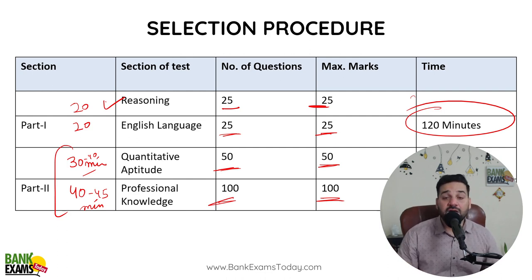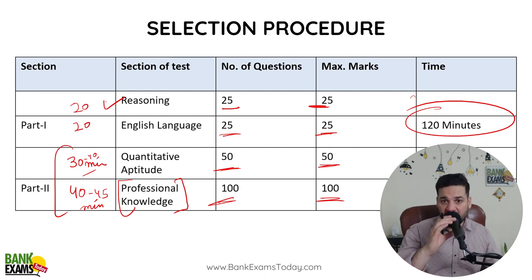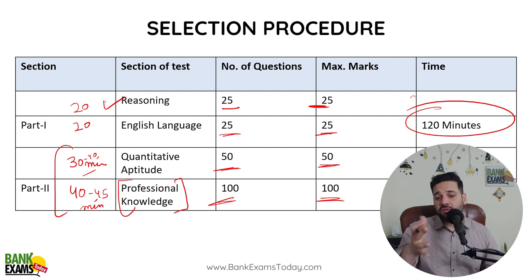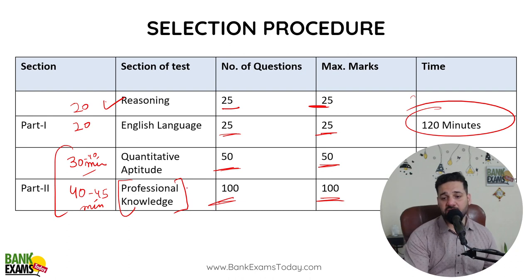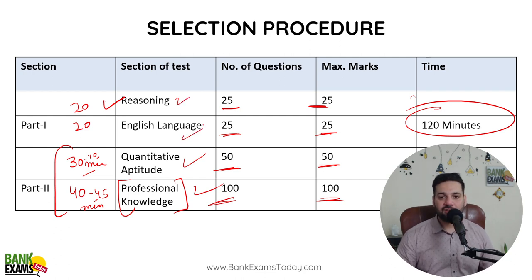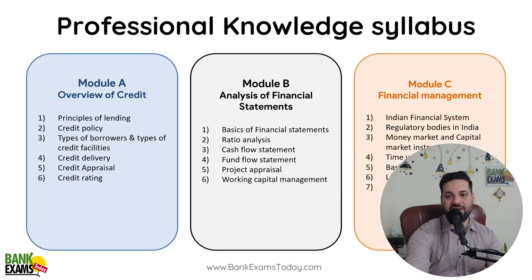I would highly recommend starting with professional knowledge if you have the option in the exam. It will give you a lot of confidence and boost your motivation level. In the first 20-25 minutes, when you complete 40-45 questions, your morale will be boosted. Always start with professional knowledge, then move on to quantitative aptitude or reasoning, and finally English language at the end. That is my personal recommendation.